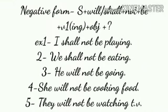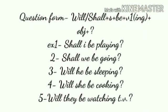Let's see the negative and question forms of future continuous tense. Negative: Subject plus will/shall plus not plus be plus V1 with -ing plus object. Question form examples: Shall I be playing? Shall we be going? Will he be sleeping? Will she be cooking? Will they be watching TV?